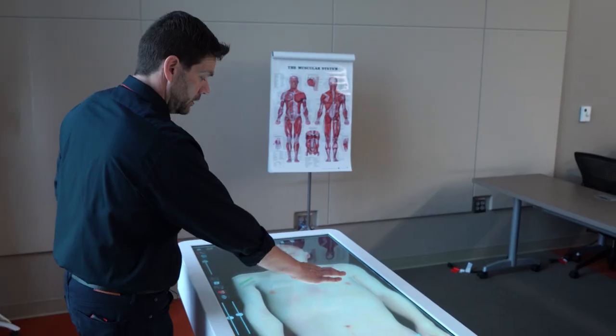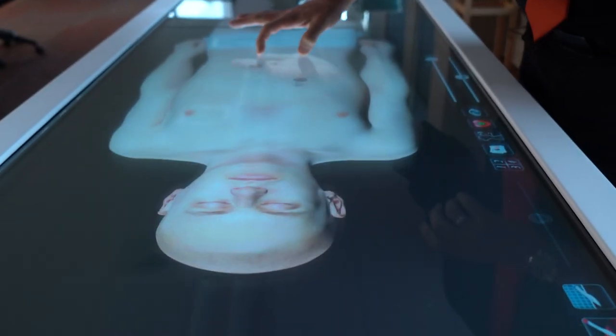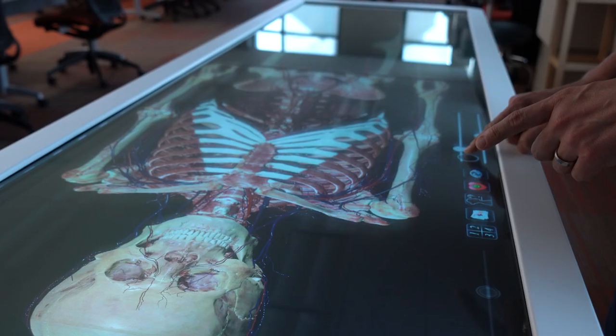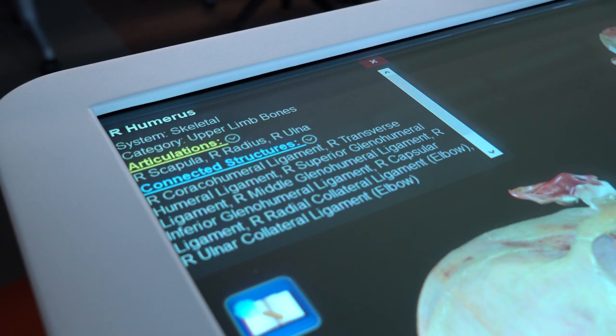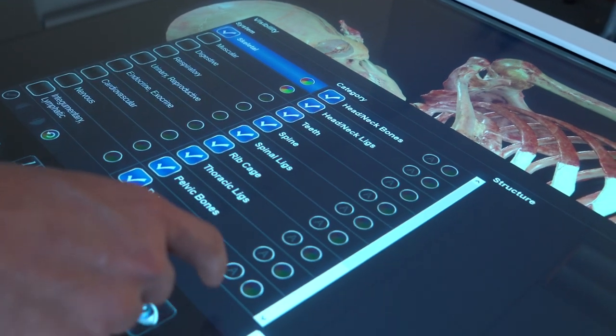Alright so here you can see we pulled up the male cadaver. You have the capability to move the cadaver in any orientation you like. With that we also have the capability to go layer by layer dissection, increasing or decreasing structures. We can isolate one unit or function. Here we have the skeletal system.